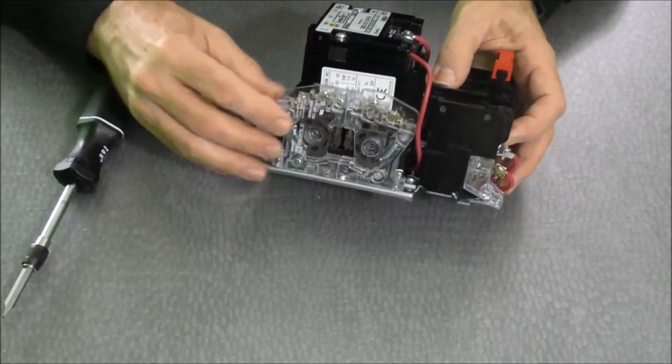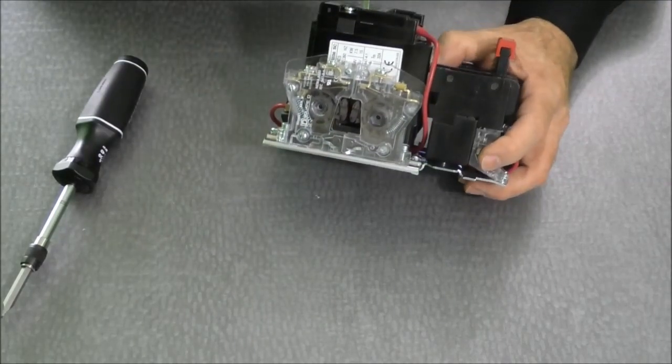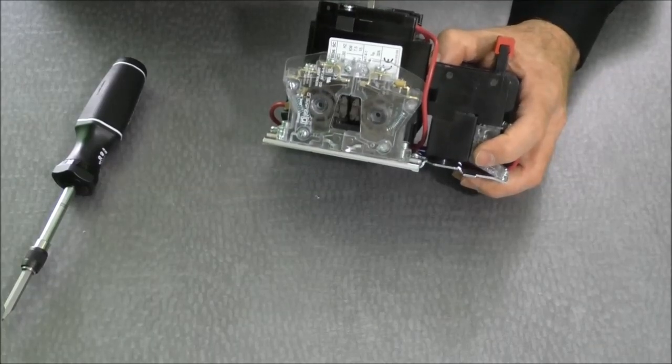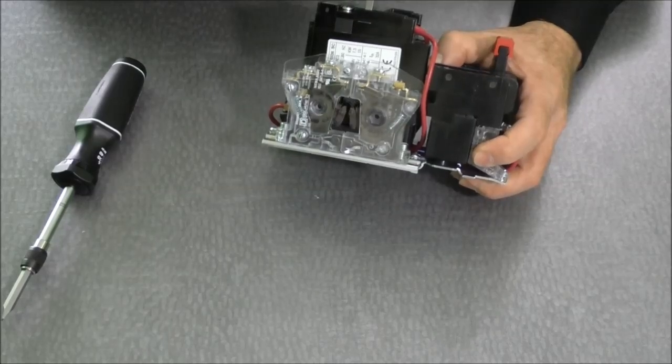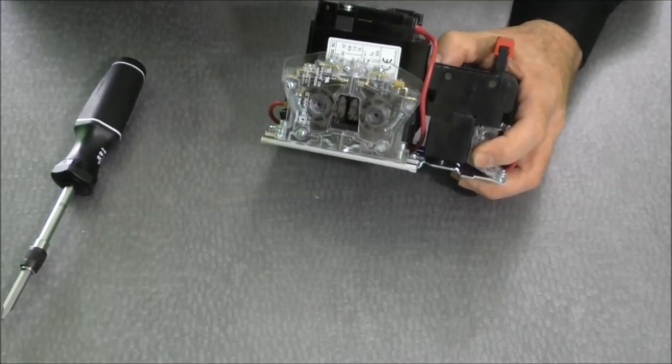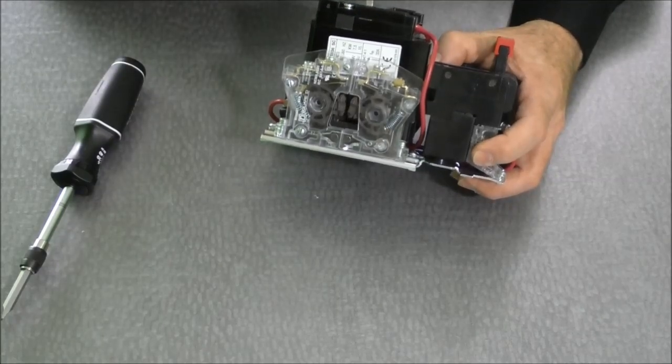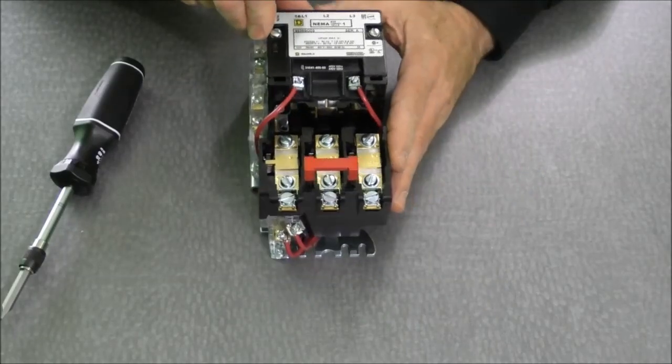And now that's what the starter will look like with the auxiliary contact blocks on. We want to make sure that they're engaged properly. We have a tab on the top that we can engage the coil, move the contacts, and we can see that the auxiliary contacts themselves are changing state by the movement of the levers on the contacts. So now we have two auxiliary contacts installed on this starter.